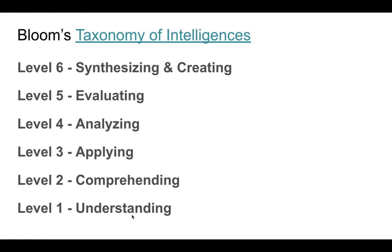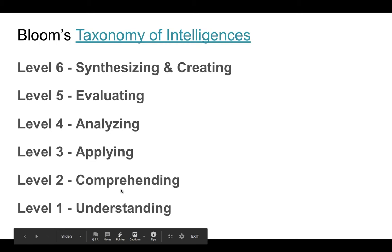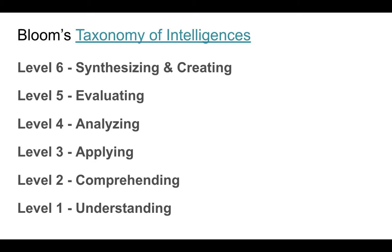Starting at the very bottom, level one is understanding — do you understand something? Can you see it, recognize it, know it? Level two is comprehension — not just can you identify it, but do you understand the background information, where it comes from, the origin and the definition? Level three is applying the knowledge — you go from recognizing it and understanding its parts to being able to use it to do something. Level four is analyzing — now you're comparing it to other things and seeing how it fits into a larger scope of knowledge.